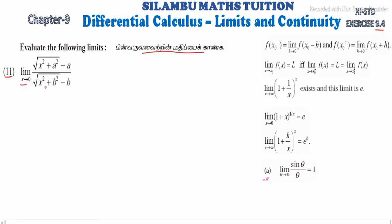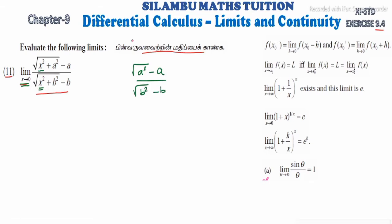See, limit x tends to 0: square root of x squared plus a squared minus a, divided by square root of x squared plus b squared minus b. If we directly approach x tends to 0, in the place of x put 0: square root of 0 plus a squared minus a, divided by 0 plus b squared minus b. Square root will cancel, left out we get a minus a divided by b minus b. We get 0 by 0.